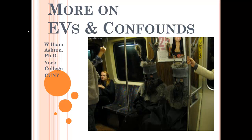We're starting the More on Extraneous Variables and Confounds slideshow, and I'm doing something a little different. I'm using the microphone on my webcam, so I don't have to wear the headphones. Hopefully you have watched the Advanced Methods slideshows number one and two — that's the prerequisite for this slideshow. We'll begin with the confounds, and here we have a Subway scene with two Monty Python Knights who say 'Ni,' which may confound many of the writers.